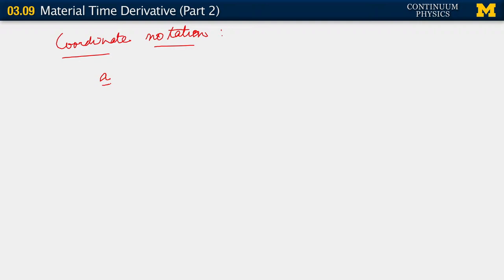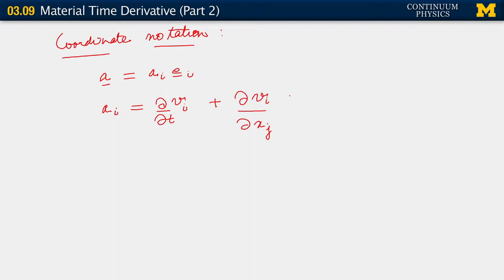With coordinate notation, we would write A as A_i E_i, where A_i is the partial time derivative of little v sub i plus partial of v_i with respect to little x sub j, times v_j.